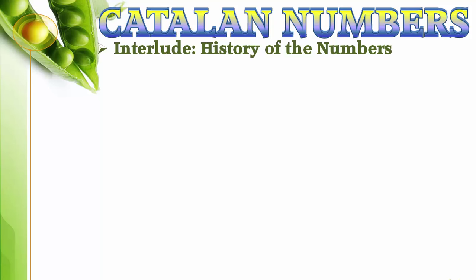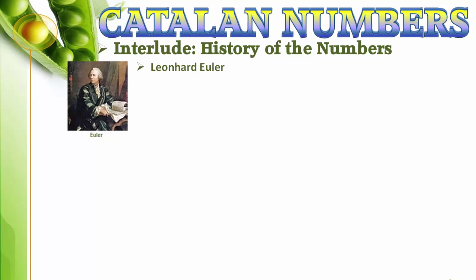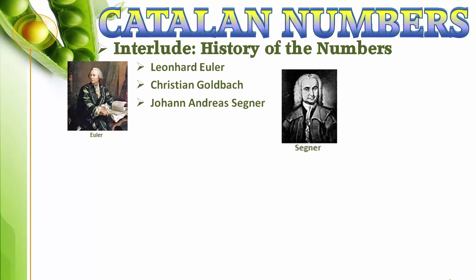The first closed formula of the Catalan numbers was found through the collaboration of three great mathematicians and scientists of the 18th century: Leonhard Euler, Christian Goldbach, and Johann Andreas Segner. In 1751, Euler wrote a letter to Goldbach in which he described his polygon division problem. He defined the now-called Catalan numbers as the number of triangulations of an n plus 2 gone and guessed a product formula as well as the corresponding generating function.